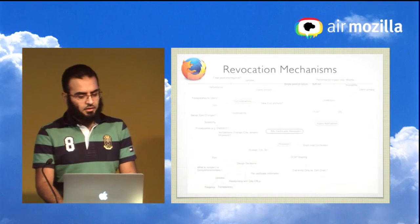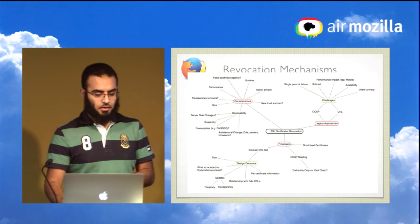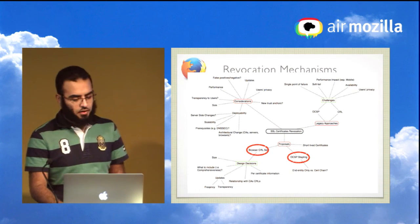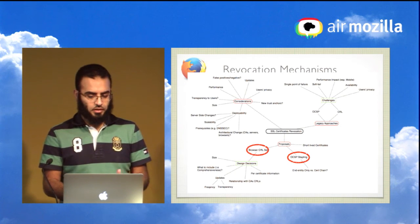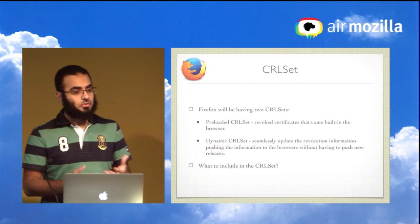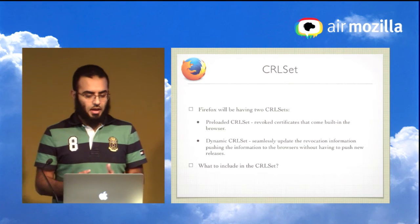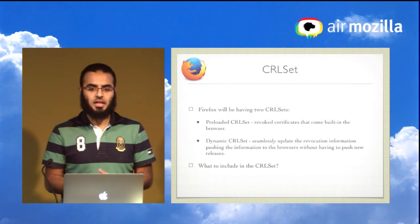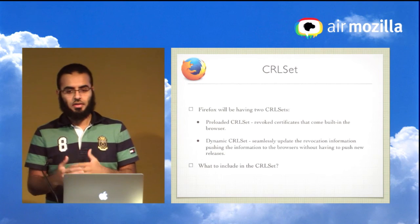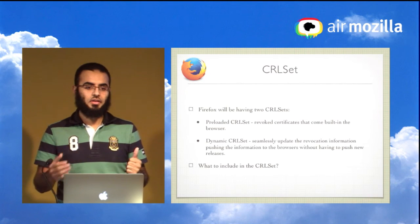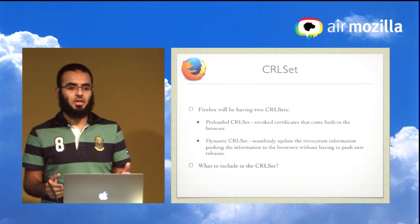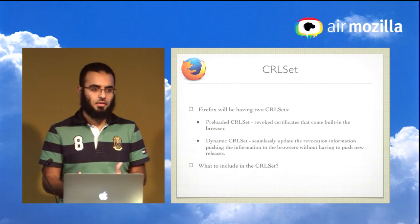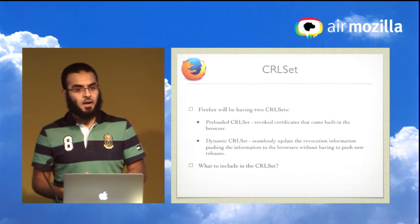To put things in perspective, this represents the full map of revocation challenges and the many considerations involved. In Firefox, we're currently implementing both of these mechanisms. For CRLSets, Firefox will have two sets: a pre-loaded CRLSet bundled with the browser, and a dynamic one. A CRLSet consolidates revoked certificate serial numbers from multiple issuers, so Firefox checks the issuer and then whether that specific certificate has been revoked.